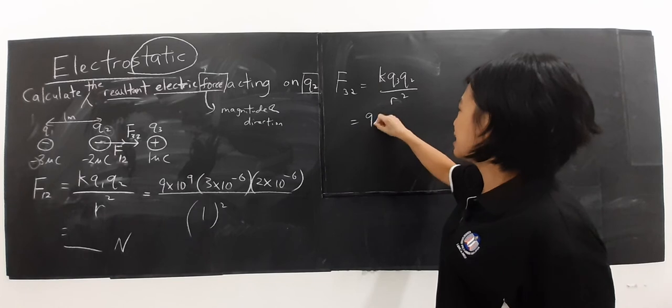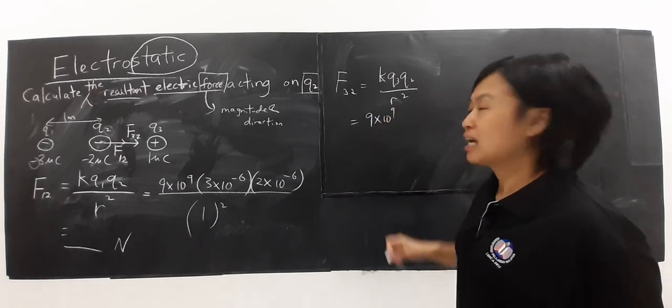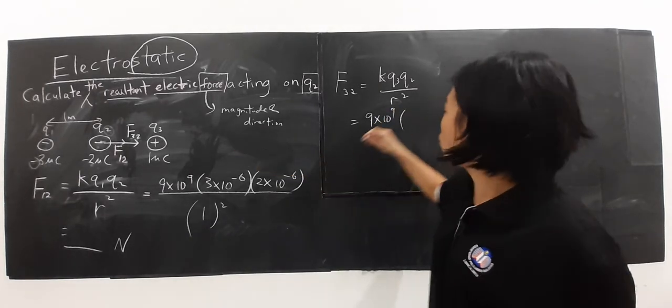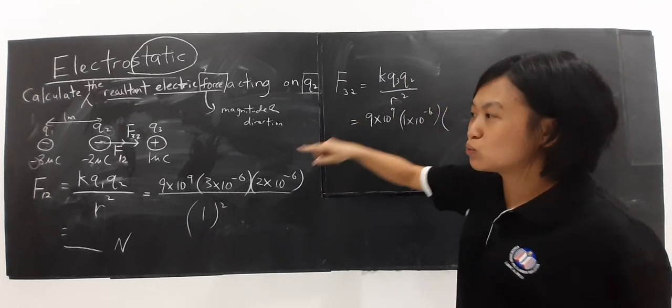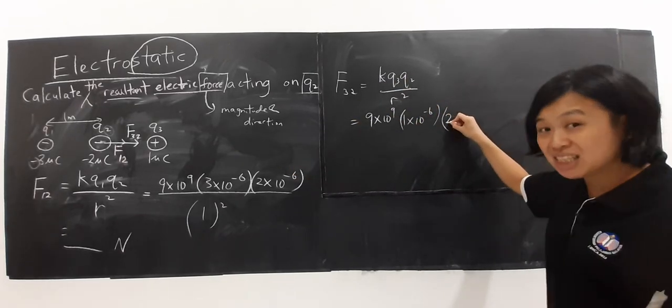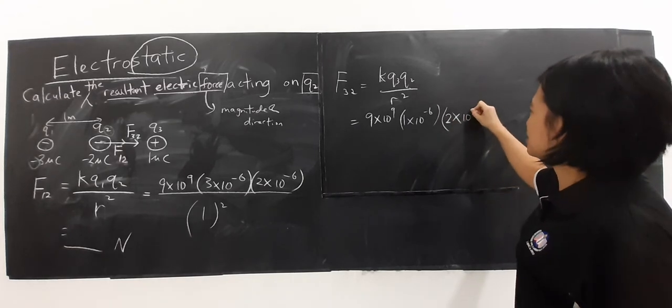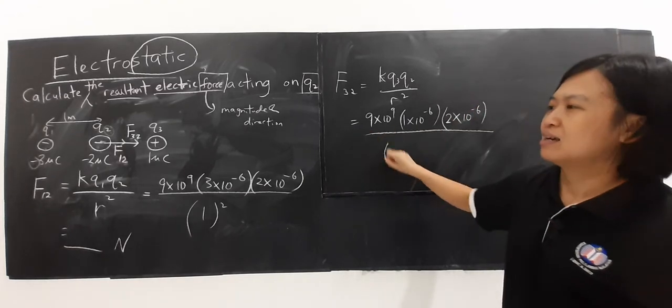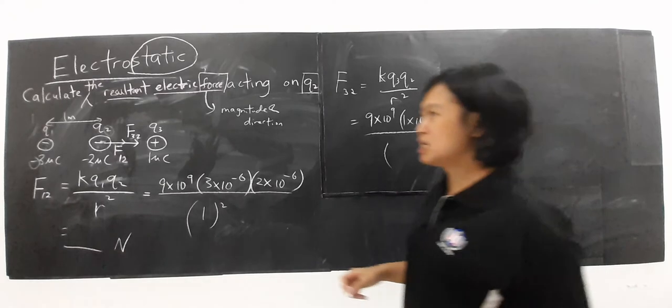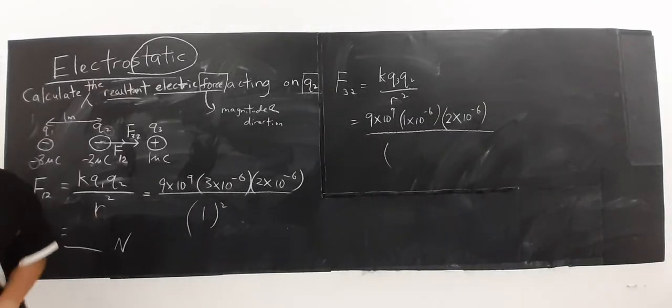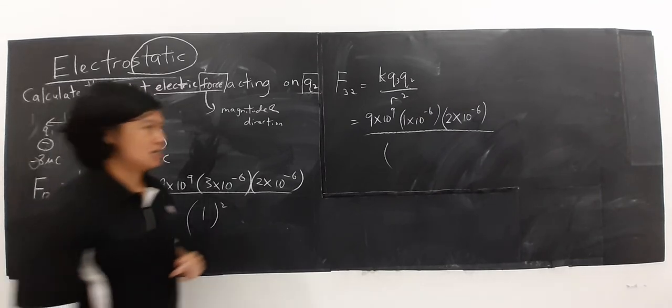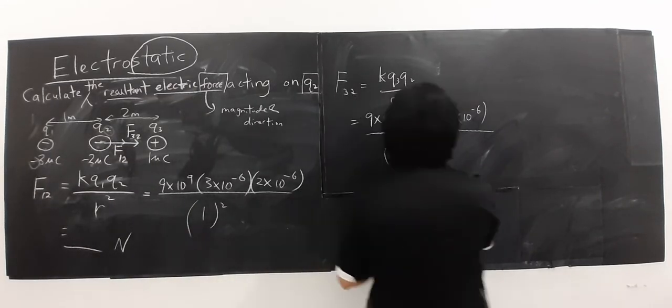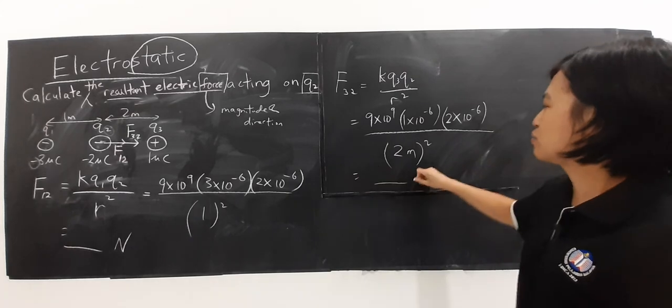Apa nilai K? 9 exponent 9. Apa nilai Q3? 1 exponent negative 6. Q2. Remember, the negative sign never substitute in. And what are the distance between this? Apa jarak di antara ini? Contohnya diberi 2 meter. So ini ganti dengan 2.